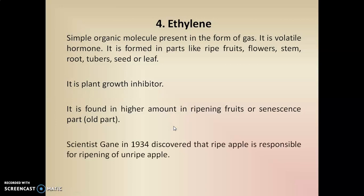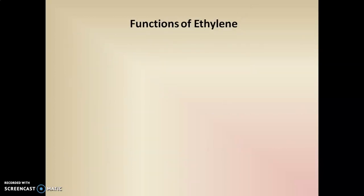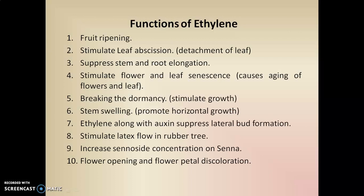Regarding the discovery of ethylene, the scientist Gane in 1934 found that ripened apples are responsible for the formation of ethylene gas, and this ethylene is responsible for ripening of other unripe apples. Accordingly, he found that ethylene is generally responsible for ripening in fruits. So the first function of ethylene is fruit ripening.